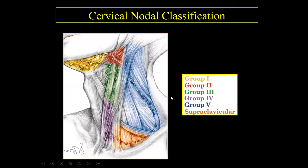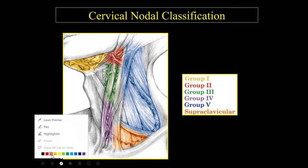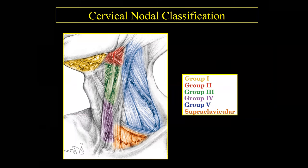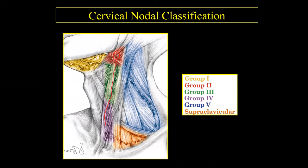The cervical lymph nodes are classified from groups 1 through 7, including the supraclavicular lymph nodes. Level 1s are below the chin — the submandibular lymph nodes. The remainder of the lymph nodes are almost like a string of pearls. The anterior lymph nodes are level 3 and level 4. The posterior limb is level 5, and they connect through the supraclavicular lymph nodes.